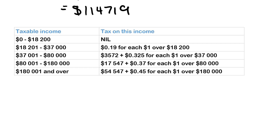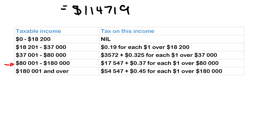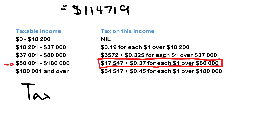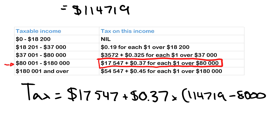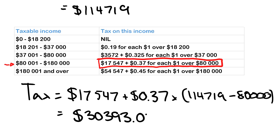Now we calculate his payable income tax. First, we identify what bracket he fits into — he fits into this bracket here, so we focus on this section. His tax is $17,547 plus $0.37 for every $1 over $80,000. So we take $114,719 minus $80,000 to find how much over $80,000 he's earned, and put it into the calculator. Gabe owes $30,393.03.